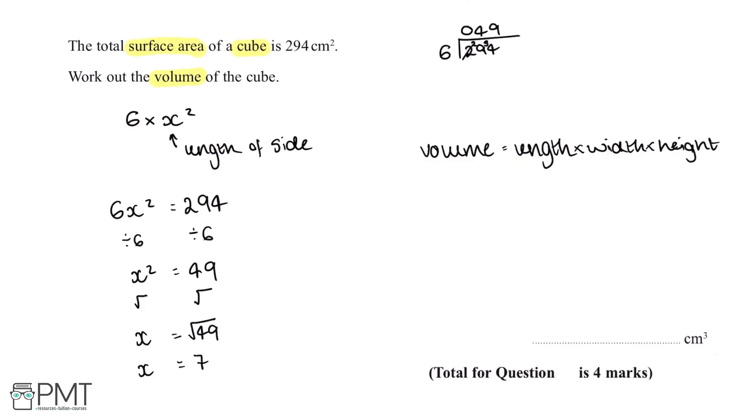Because all of the side lengths are equal, this means that volume is equal to 7 times by 7 times by 7, which we can simplify down to 49 times by 7. To work out 49 by 7 we can use the grid method.